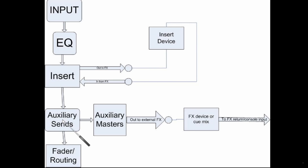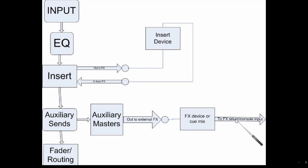Auxiliary sends work differently. The auxiliary send takes a split of the signal from that channel, sends it off to the auxiliary master, but it also continues on its way down to the routing and fader section of the console. From the auxiliary master, it goes out to an external effects device, or auxiliary sends can also be used to build headphone mixes. If it does go out to an effects unit, then it needs a way to bring the output of that effects unit back to the console — usually that's an effects return or a spare console input. But that's a good thing, because it means you can blend the amount of the affected signal with the dry signal really effectively.